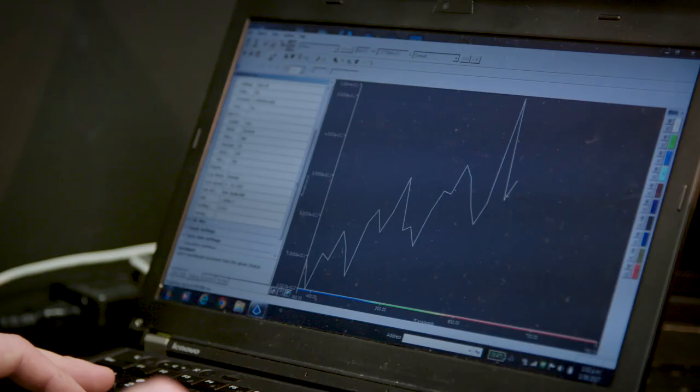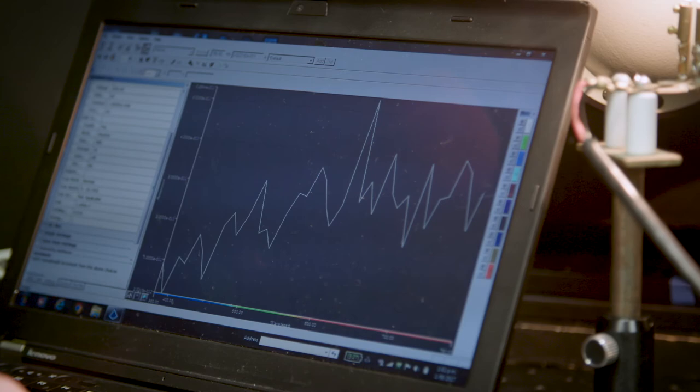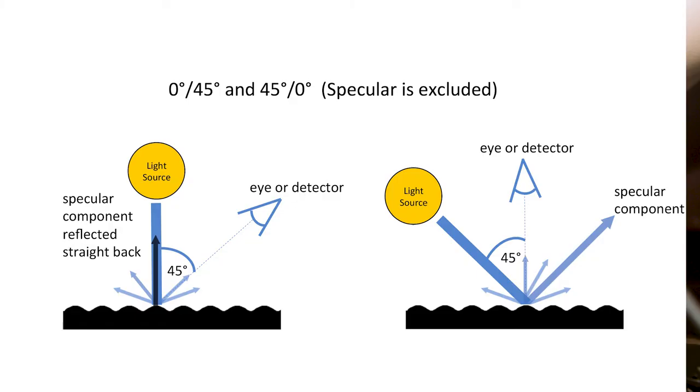Zero degrees 45 measurements can be sensitive to the texture of the surface so are best used to compare the colour of samples with the same finish. In reflectance measurements the inverse geometry gives the same result so zero degrees 45 or 45 degrees zero measurements are interchangeable.